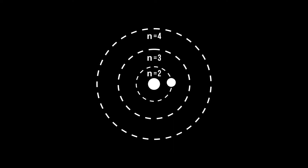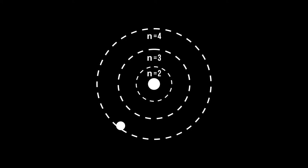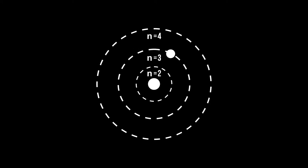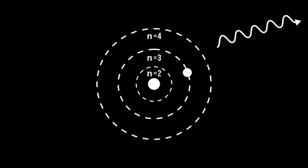If those electrons gain energy, they move from one energy level up to a higher energy level through distinct steps. And likewise, if the electrons lose energy, they drop down to a lower energy level. This lost energy can be carried away in the form of light, or photons.